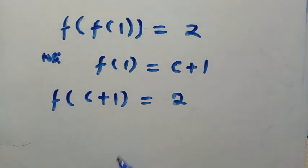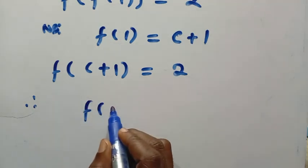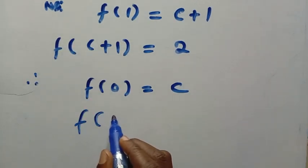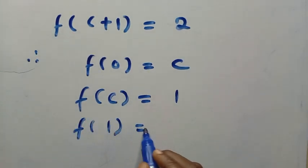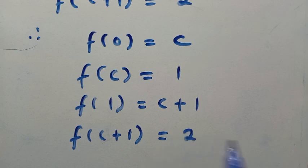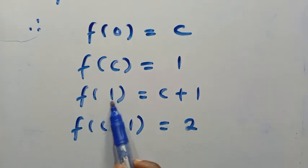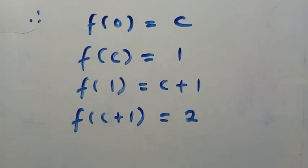Looking at what we have, we can observe a chain: f of zero equals c, f of c equals one, f of one equals c plus one, f of c plus one equals two. Continuing the pattern, f of two equals c plus two. This pattern keeps going, so we have a clear chain, and we are now going to assume a linear form.